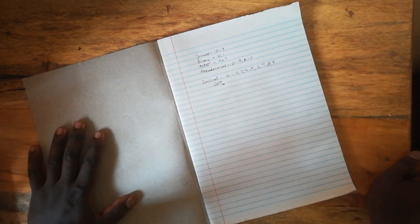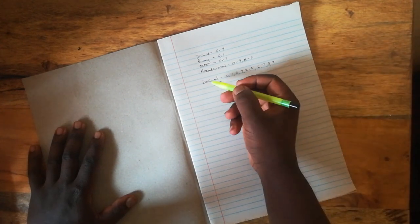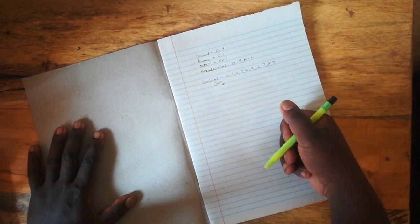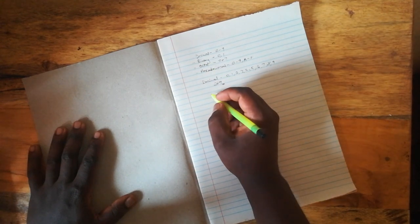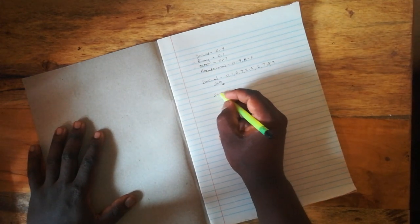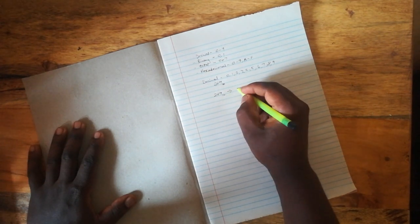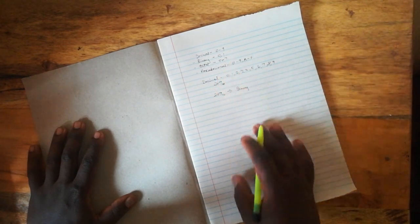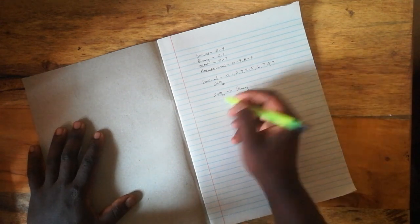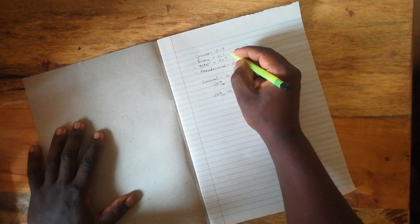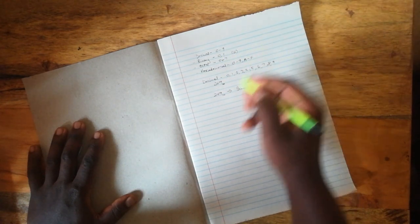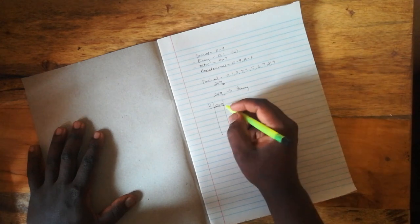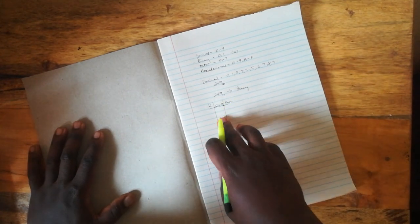The first thing I'd like us to do is how can we convert a number from the decimal system to binary, octal, and hexadecimal. Let's begin with binary, converting 249 to the binary number system.